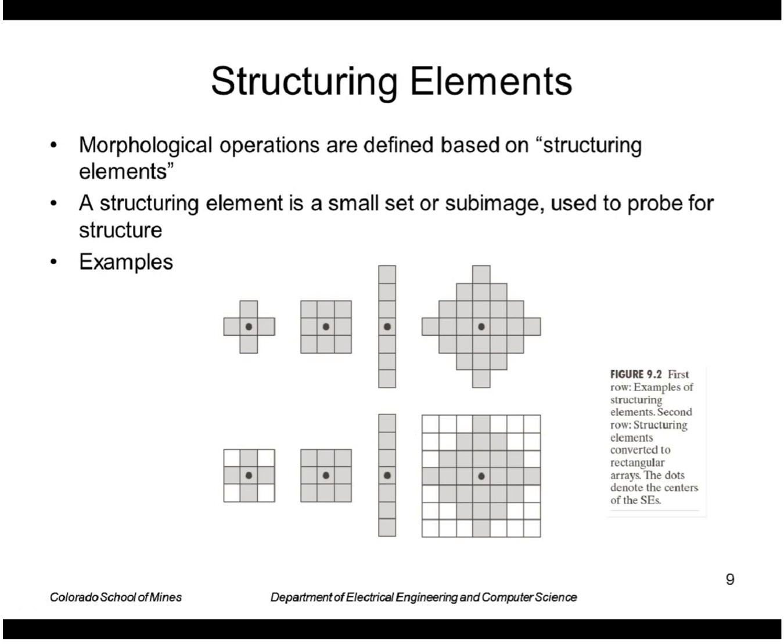In morphological image processing we often use structuring elements. A structuring element is just another set or sub-image that we use to probe for structure. Here are examples of structuring elements. They're usually small like this, and implementation-wise we would store these in a rectangular array where the gray areas indicate ones and the white areas would be elements where there's zeros. We also need to define for each structuring element what its center is, so the black dot here denotes the center.